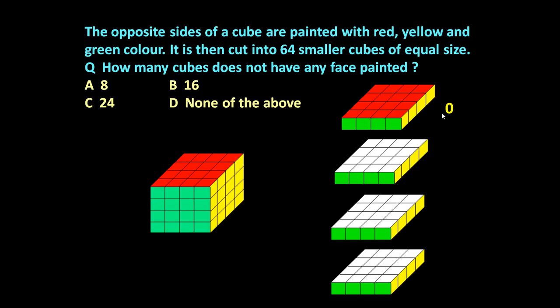Now let us see slice number 2. Here all these cubes, side cubes, they will be having at least one or two sides painted. This is having two sides painted. It is one side painted, one side, one side. All these cubes are having one side painted.